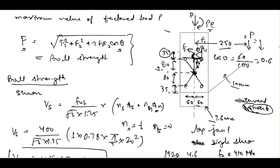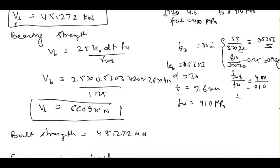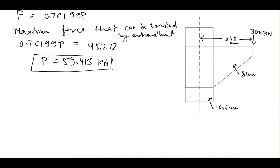Generally, when using a column, we use an I-section with a bracket on each side. One load P is applied on each bracket, so the total load on the column equals 2P.